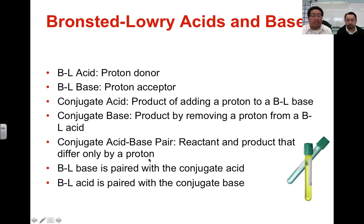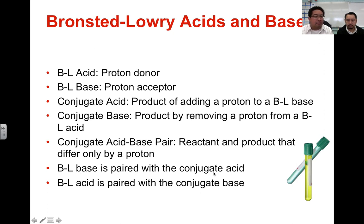We can look at something before and after proton donation and acceptance and create acid-base pairs. Bronsted-Lowry bases are always paired with conjugate acids — after the base accepts a proton, the product on the other side will be an acid. Bronsted-Lowry acids, after they've donated their proton, will have the conjugate base as the product. Remember that protons and hydronium ions are basically the same thing.